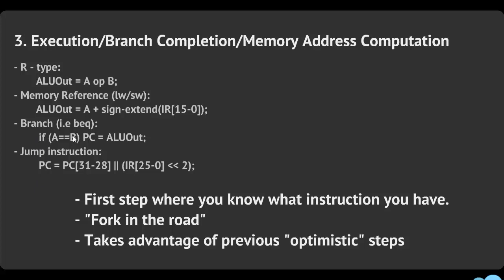For example, for the branch instruction — say BEQ, branch if equal — if A and B are equal, you set PC equal to ALU out. Remember, that ALU out value was computed in step two just in case it was a branch, and this is exactly where that comes in: if A and B are the same, you load that pre-computed branch target into PC.